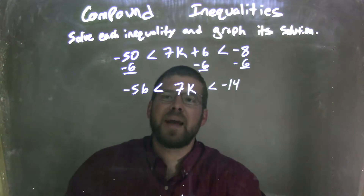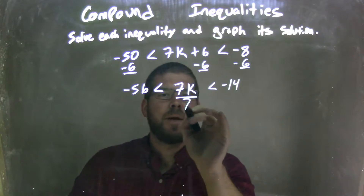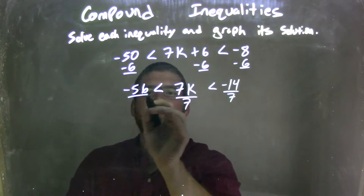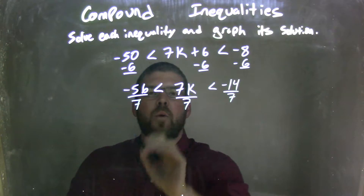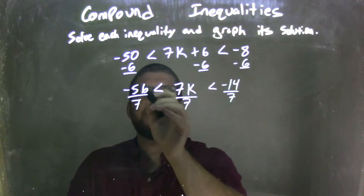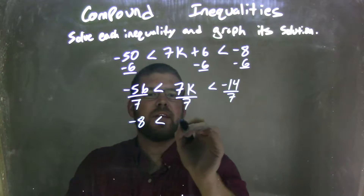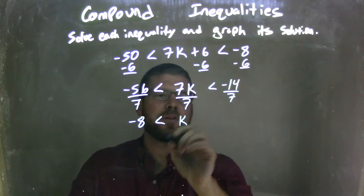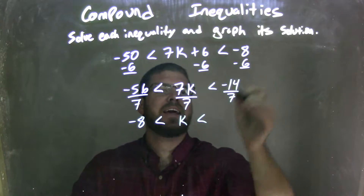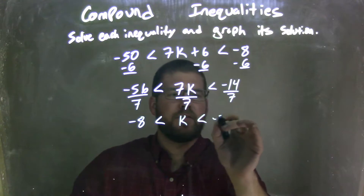Now what I need to do is divide by 7 — divide by 7 to all parts as well. Negative 56 divided by 7 is negative 8. That's less than k, which is by itself, which is less than negative 14 divided by 7, which is negative 2.